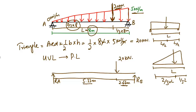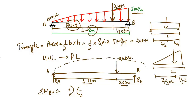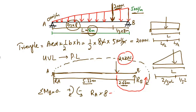The next step is to take moments at point B, setting the sum of moments at B equal to zero. We take clockwise moments as positive and anti-clockwise as negative. RA acts upward and creates a clockwise moment about B, so it is positive: RA × 8. The 20 kN load creates an anti-clockwise moment about B, so it is negative: −20 × 2.66. Setting the sum equal to zero: RA × 8 − 20 × 2.66 = 0.